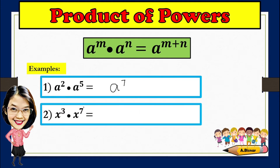Another example: x cubed times x raised to 7. Again, look if the bases are the same. Since they are both x, then just simply copy x and add its exponents. 3 plus 7, you'll have 10.